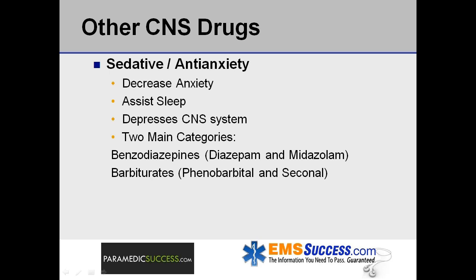Sedative and anti-anxiety medications are commonly used to decrease anxiety and assist sleep by depressing the CNS. The two main categories are benzodiazepines and barbiturates. Examples of benzodiazepines include diazepam and midazolam. Examples of barbiturates include phenobarbital and seconal. Barbiturates are typically less frequently used due to their more intense effect.